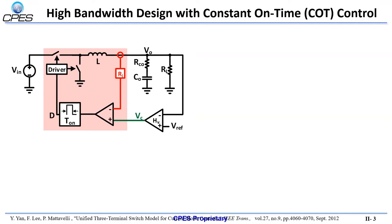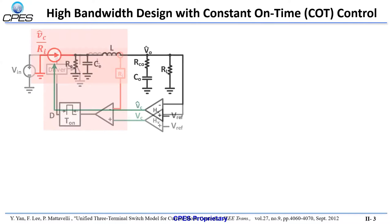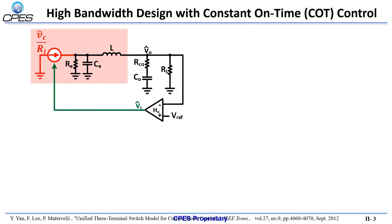The control loop compares the inductor current with the feedback loop information to control the on-time. In the small-cycle model, the current loop is represented by a current source. The sideband effect of the current loop is represented by the RESCE elements, and creates a double-pole where the Q value is fixed and its frequency varies with respect to the duty cycle.